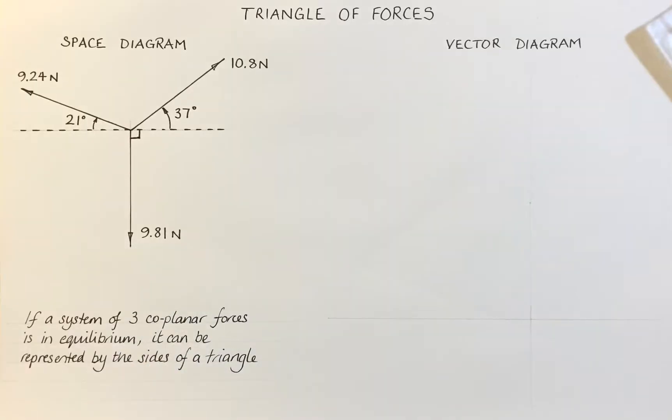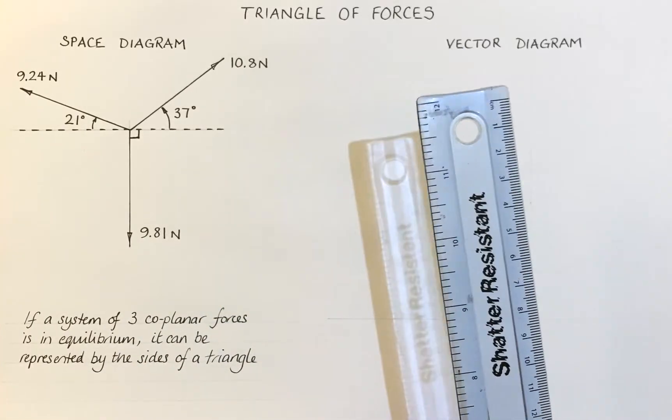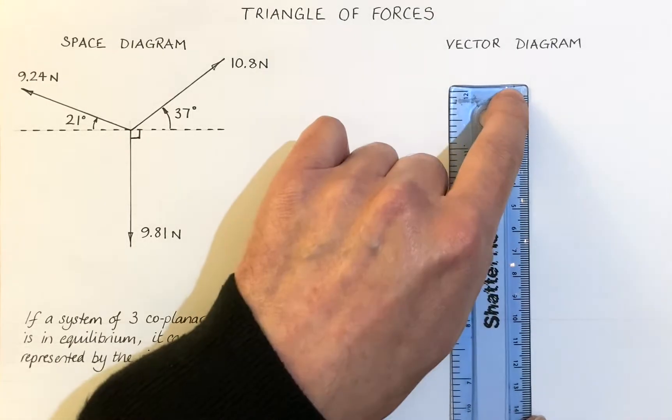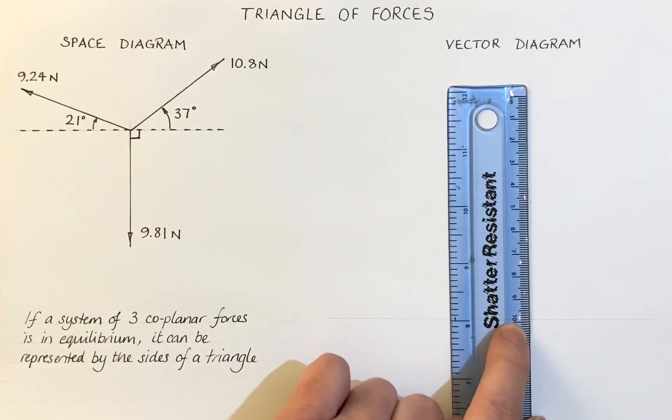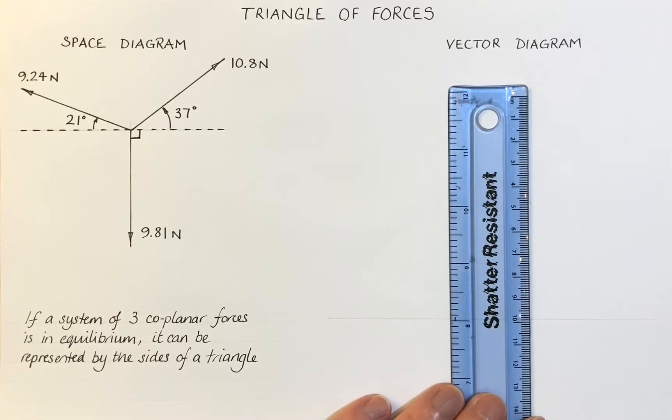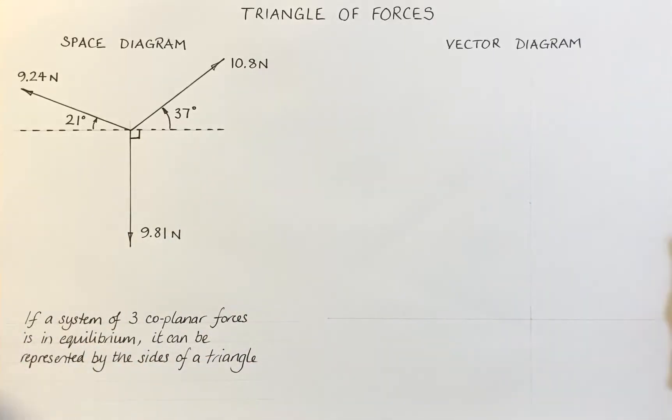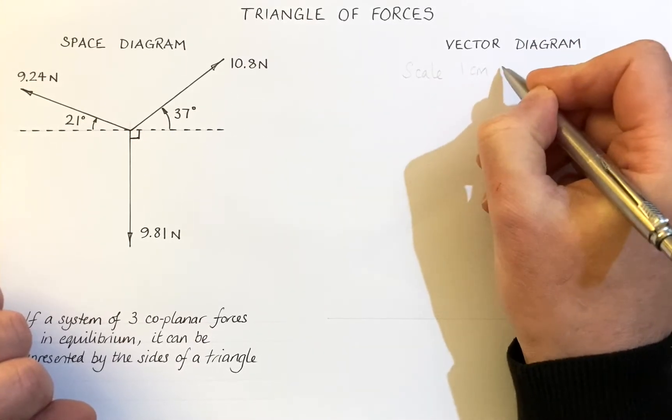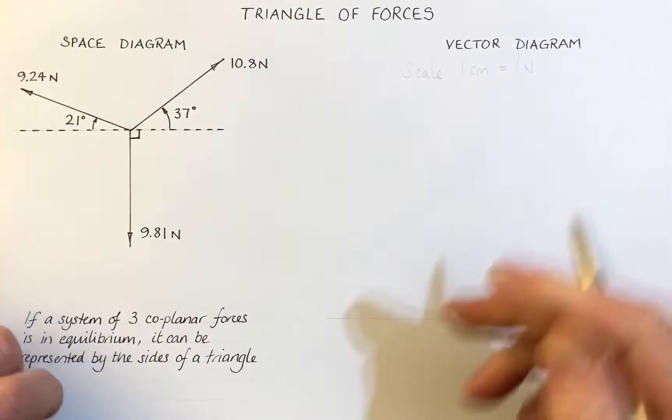Now it's 9.81 newtons, so we need to think about scale. So I think one newton per centimeter should suffice there. Let's write that up. Scale: one centimeter equals one newton.